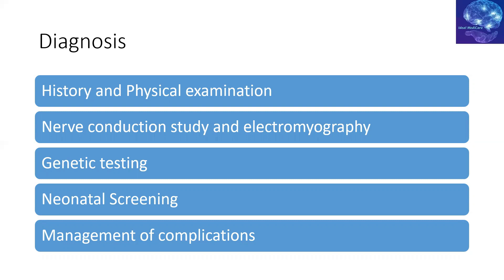Confirmation of diagnosis is done with genetic testing. SMN1 deletion must be confirmed, and SMN2 copy numbers must be assessed to guide treatment. It is recommended that SMA testing be made part of neonatal screening, which is not yet common in Pakistan. Earlier treatment provides more benefit, and management of complications should be discussed with the family.